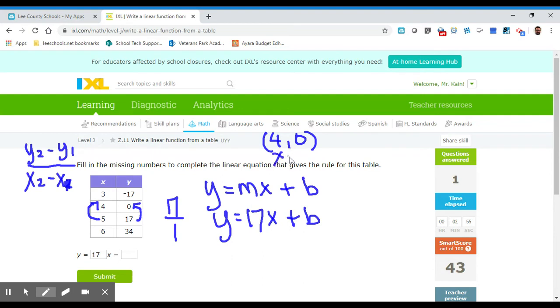So my x is 4 and my y is 0. Since x is 4, I'm going to put it right there, and since y is 0, I'm going to put it right there. So 0 equals 17 times 4 plus b. 17 times 4 is 68.